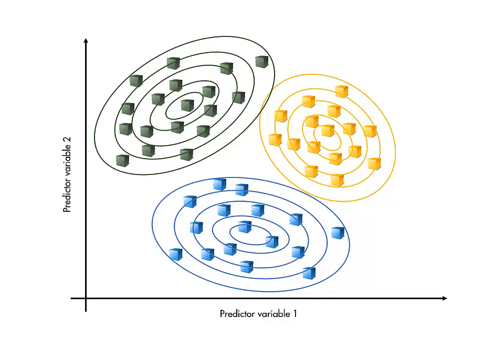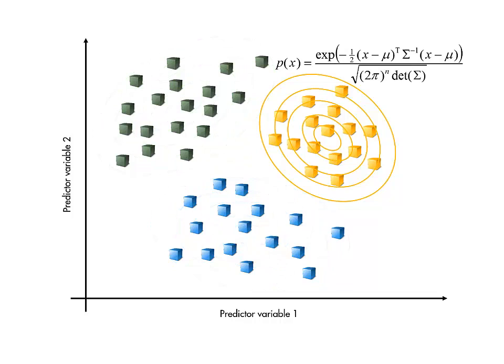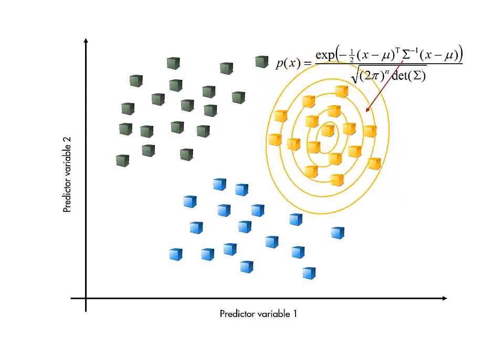Theoretically, we could fit an n-dimensional normal distribution to the observations in each class. This involves calculating the mean vector and covariance matrix for each class. These determine the center and shape of the distribution, respectively.